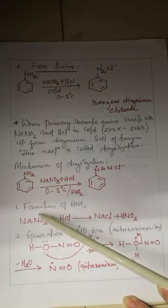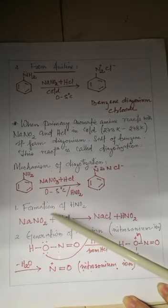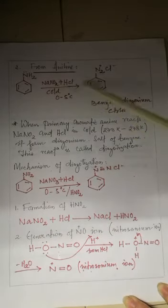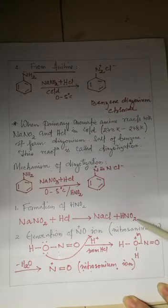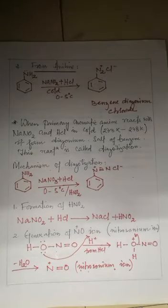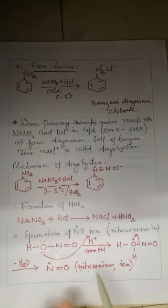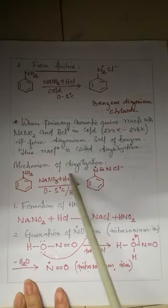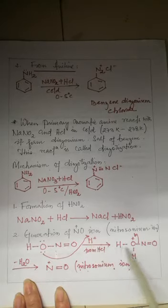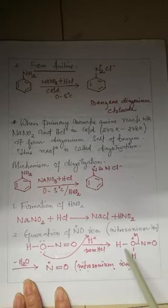The mechanism of diazotization involves three steps. Step one is the formation of nitrous acid. Sodium nitrite reacts with HCl to give nitrous acid. Step two is the generation of the nitronium ion. Nitrous acid reacts with another molecule of nitrous acid where one oxygen's lone pair donates to a hydrogen, forming an intermediate.